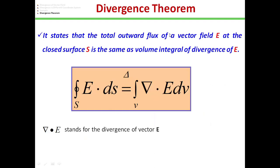Lastly, the divergence theorem states that the total outward flux of a vector field E through a closed surface S is the same as the volume integral of the divergence of E. The left side is the closed surface integral of E·dS, which equals the volume integral of del·E dV. The divergence theorem is used to convert the surface integral into the volume integral, where del·E is defined as divergence of vector field E. Thank you for watching this video.